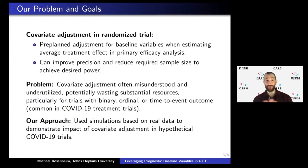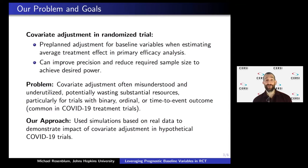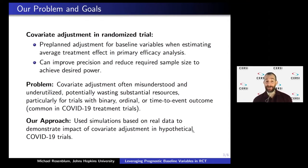It's one of the closest things to a free lunch in statistics I've ever seen. This has been known for a long time, but covariate adjustment is often misunderstood and underutilized, potentially wasting substantial resources, particularly for trials with binary, ordinal, or time-to-event outcomes — which is often the case in COVID-19 trials. Our approach uses simulations based on real data to demonstrate the potential benefit of covariate adjustment.